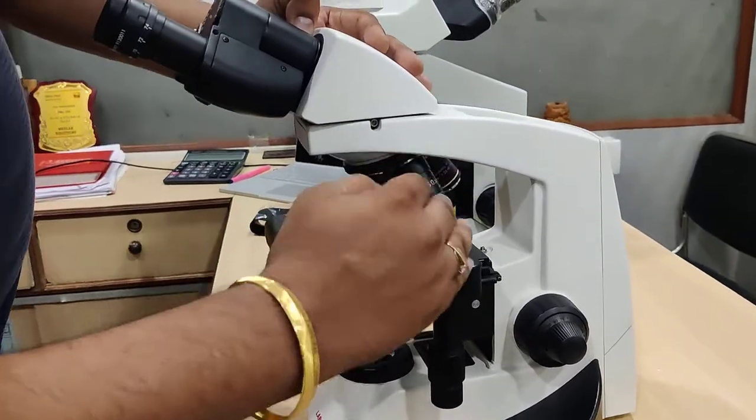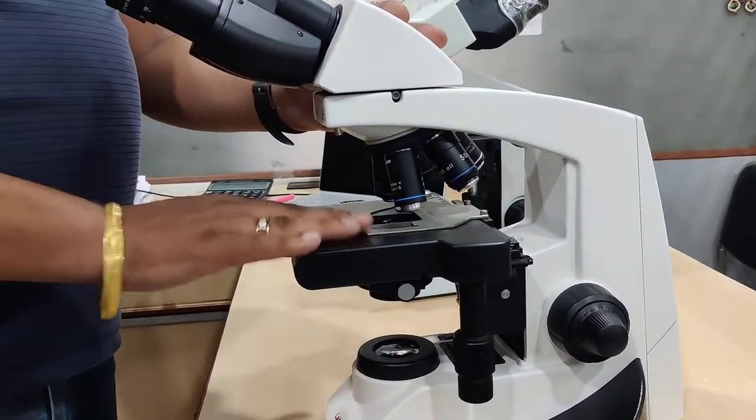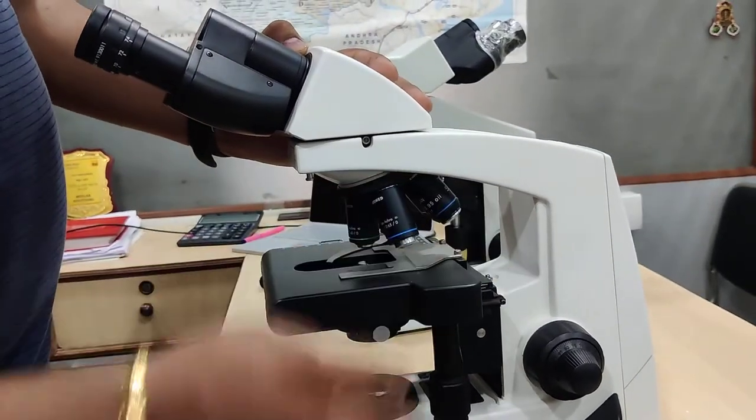As you can observe, the objectives are on the backward side. This gives you more visibility of the stage to see and place the slide.